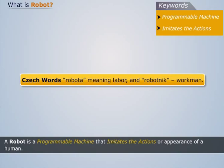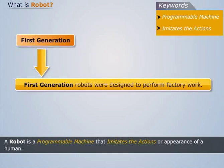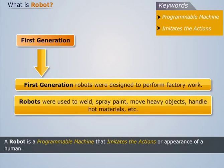Generally, there are three generations of robots. First generation robots were designed to perform factory work. Such robots performed simple tasks that were dangerous or unpleasant for people.